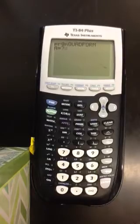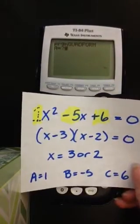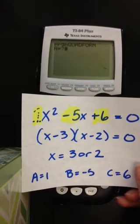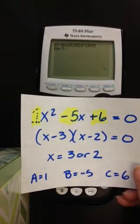And let's pretend that we have this equation. Okay. So normally this equation would factor out to X minus 3, X minus 2 gives you 0. And your answers would come out to 3 or 2.